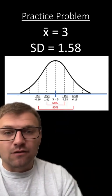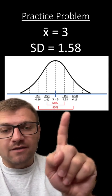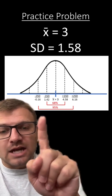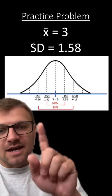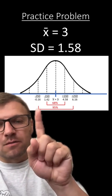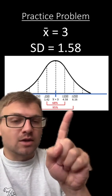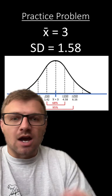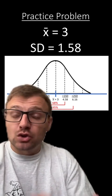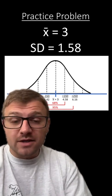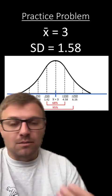Now we do the same thing for two standard deviations — we add another 1.58 and subtract another 1.58. So for this data set, 95% of the data should fall between negative 0.16 and 6.16. Typically, we stop here at two standard deviations for AP Biology, but you could go on to three standard deviations by just adding and subtracting another 1.58.